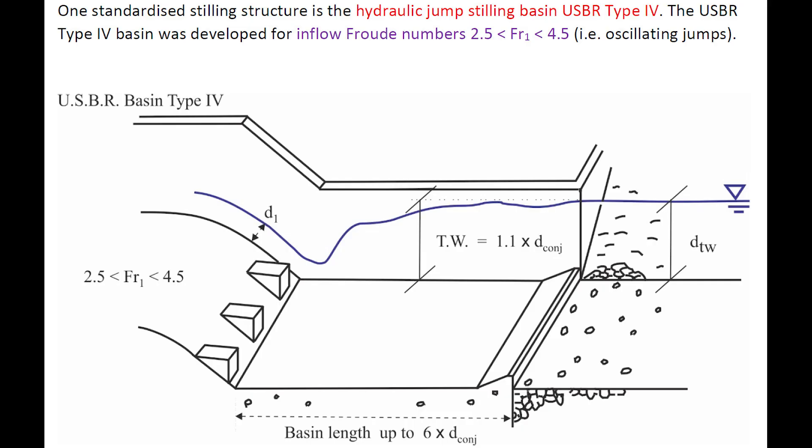One such standard stilling basin is the hydraulic jump stilling basin USBR Type 4. The USBR Type 4 stilling basin was developed specifically for oscillating hydraulic jumps with inflow Froude number between 2.5 to 4.5.